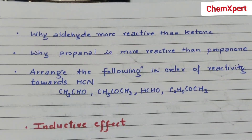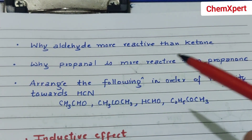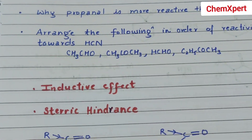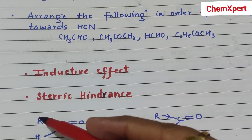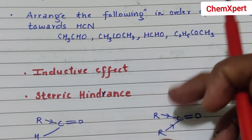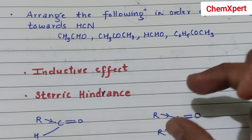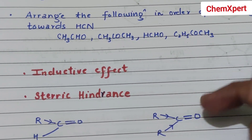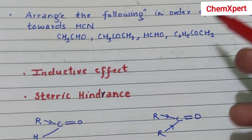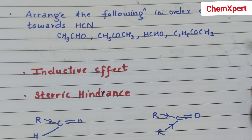To answer why propanol is more reactive than propanone, write these two points and instead of R write CH3. Show that propanone has greater +I effect and greater steric hindrance, hence it is less reactive. When arranging aldehydes and ketones based on reactivity, ketone will be the least reactive.